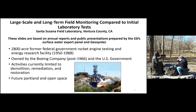The first project is the Santa Susana Field Lab in Ventura County, California, near LA. This was a 2,800-acre former federal government rocket testing and energy research facility that operated on the site for about 40 years. I've been involved in a surface water expert panel developing stormwater controls and reducing exceedances of a number of different pollutants associated with the legacy contaminants on this site, as we wait for the Department of Toxic Substances Control in California to develop the final cleanup plan. Our goal is to minimize the movement of this material from the site into stormwater.